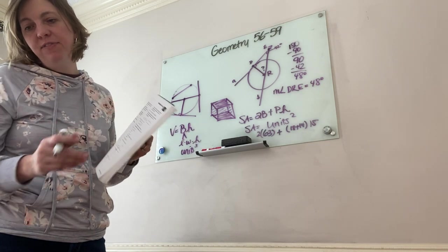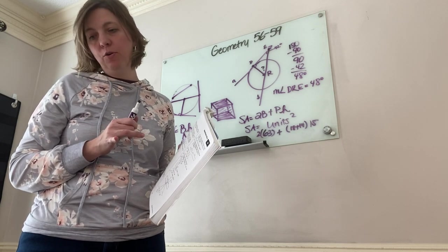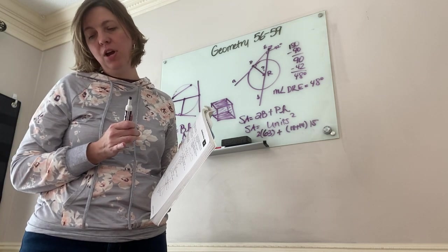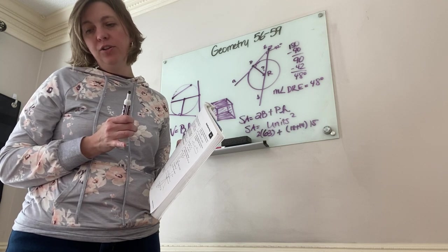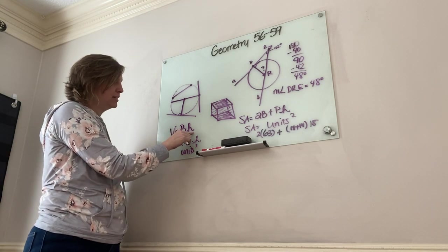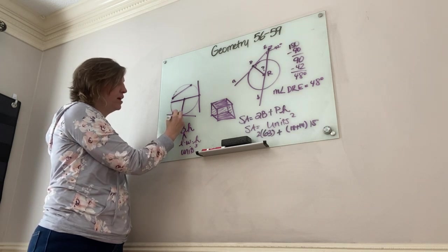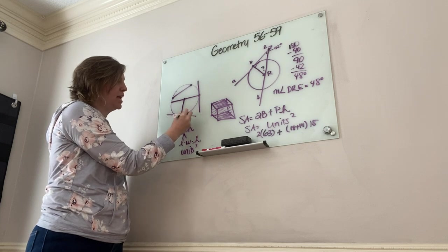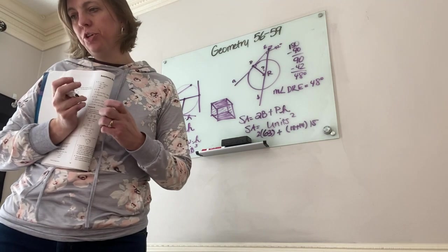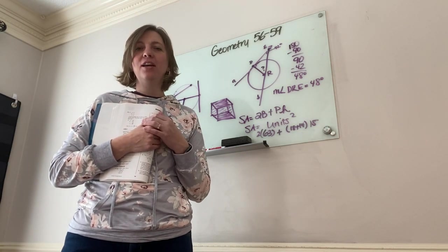Practice C says find the volume of a right pentagonal prism, and Practice D has a triangular prism. For a triangular prism, the base area is ½ × base × height of the triangle, then multiply by the height of the prism. Watch your shapes and know what formula applies. Just use those formulas — plug and chug — and you'll do a great job.